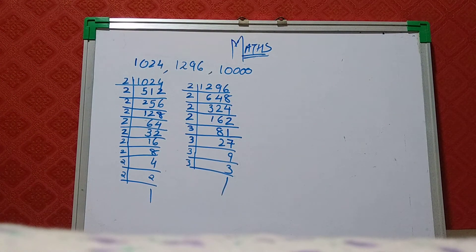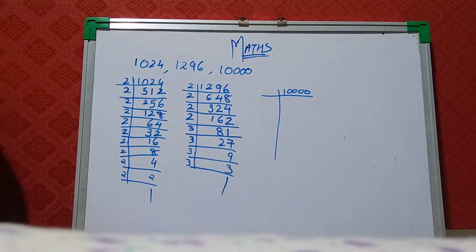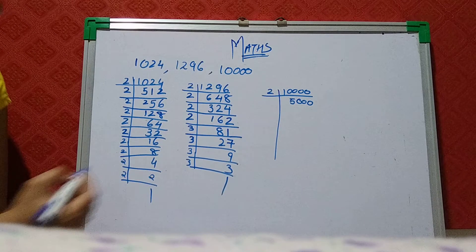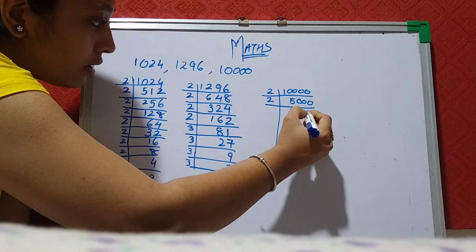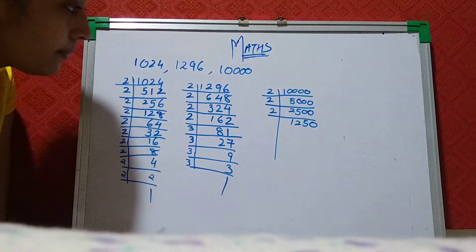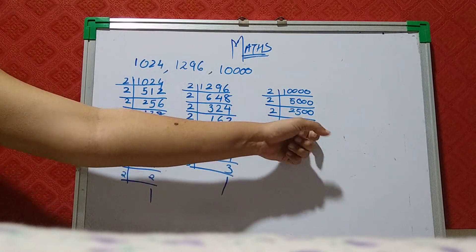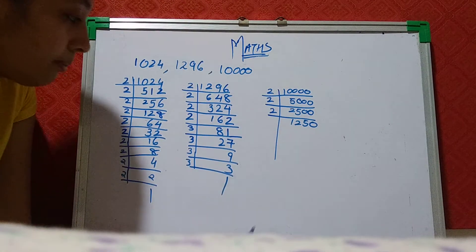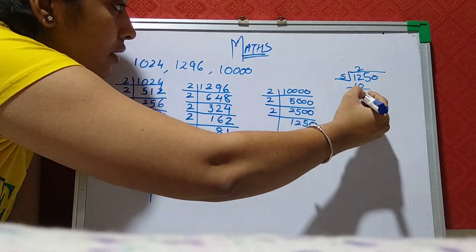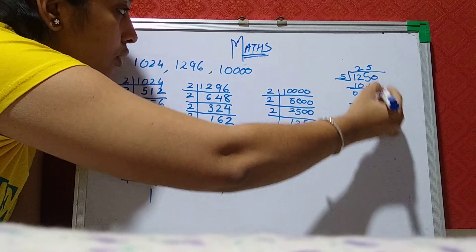Now we will go with 10,000. 10,000 we can take with 2. 5000. 5000 again with 2, 2500. Then after again with 2, it comes to 1250. Then we will go directly with 5 because 2 ke table mein nahi ho sakta. So we will go directly with 5. 5, 2s are 10, 5, 5s are 25. It comes to 250.